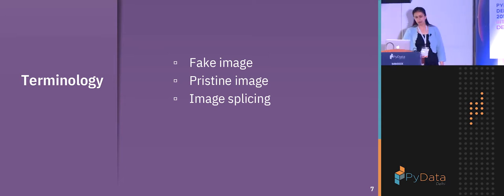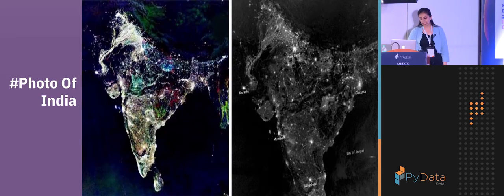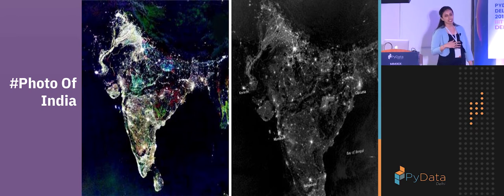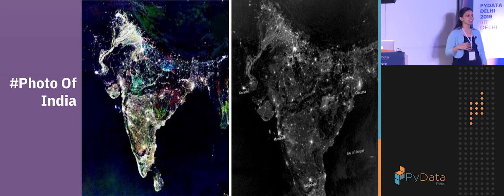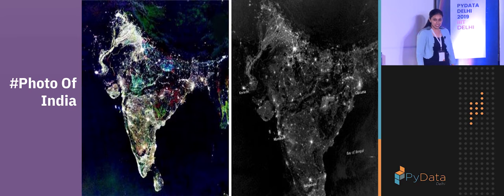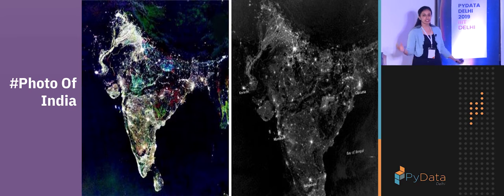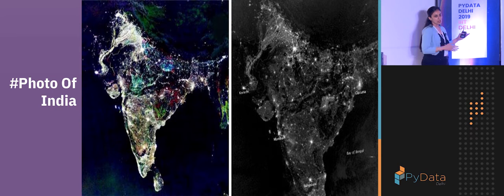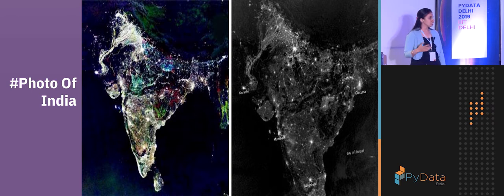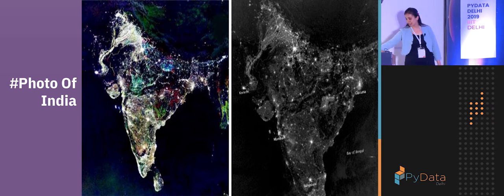Here is a photo of India that we usually see every Diwali — supposedly captured from a satellite during Diwali. But it's actually a normal satellite image where lightning effects have been added to create the manipulated image. No new content has been added, but it still gives wrong information. So this is an example of a pristine image.